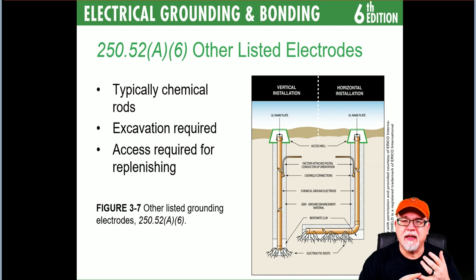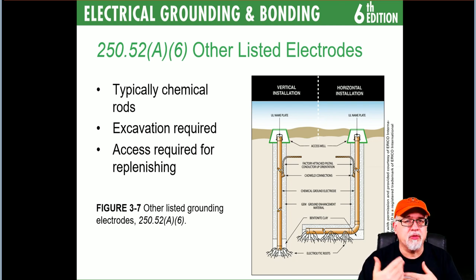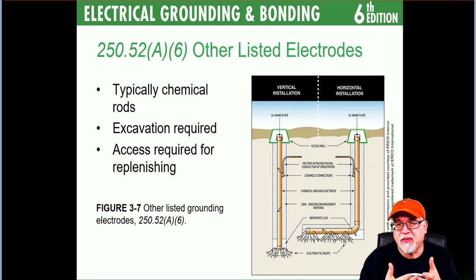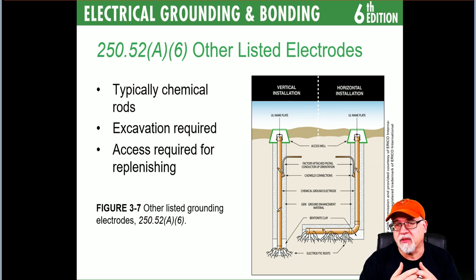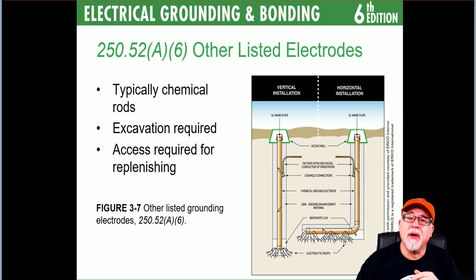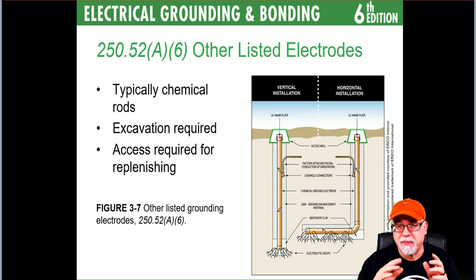The reason for 'other listed electrodes' as a category is so we don't have to maintain an all-inclusive list. If somebody comes up with another type of listed electrode that's adequate, it's already encompassed inside 250.52(A)(6). We don't want to restrict manufacturers from being creative with new concepts, but we also don't want to be constantly changing the code.